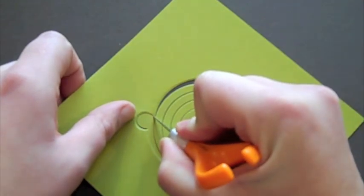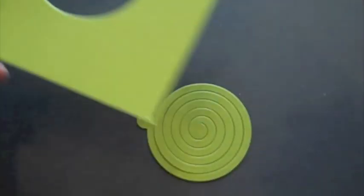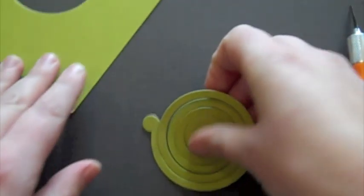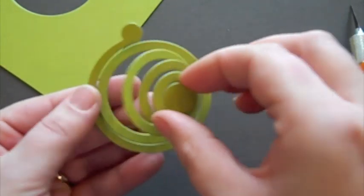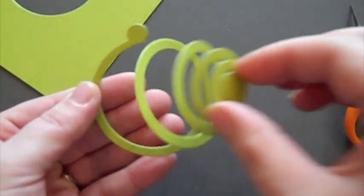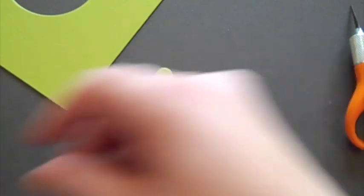So you just need to cut that little tiny tab right there, like so, and set it free. And then you have a cool little spiral right here, all ready to use on the inside of your card.